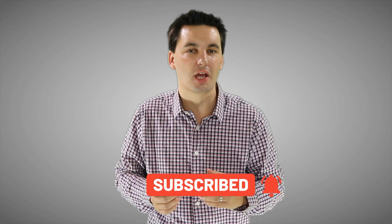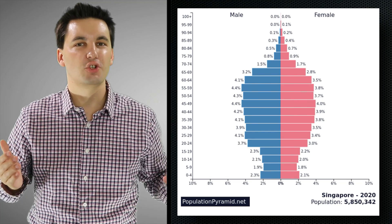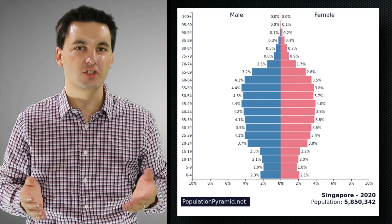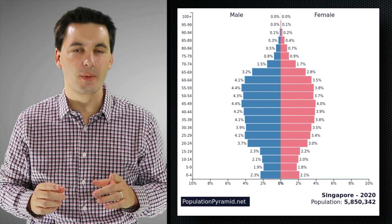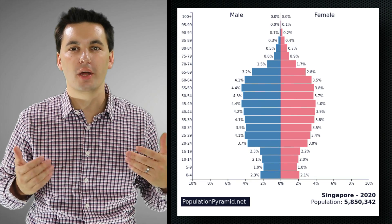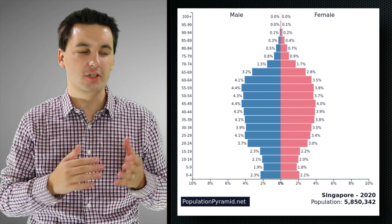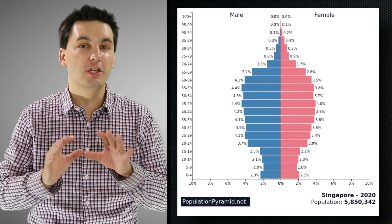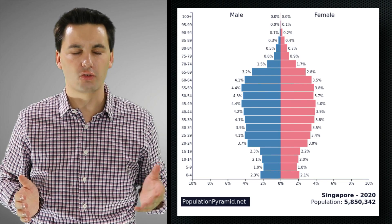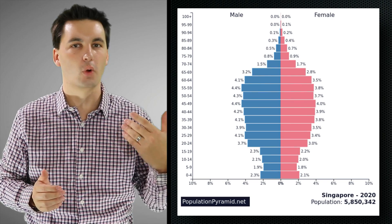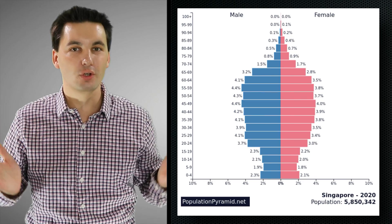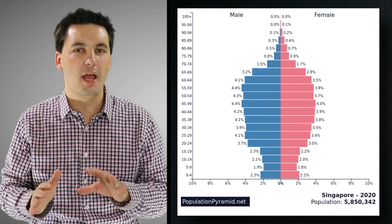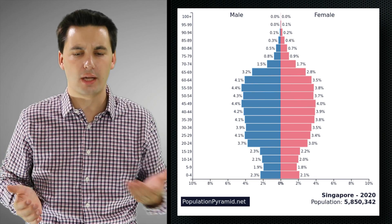A population pyramid shows a breakdown of society by sex and age at a given time, and we can use these pyramids to gain better insight into the different demographic breakdowns of society. We can use it at a variety of scales, from our local to our regional, national, and even global.